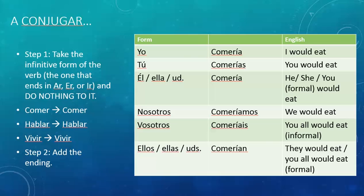Step two: add the ending. Here's the example of comer. Yo comería — I would eat. Tú comerías — you would eat. Él, ella, usted comería — he, she, or you formal would eat.